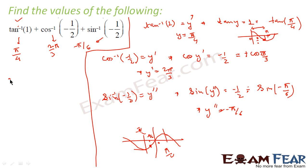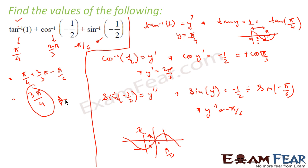Now let us add all three parts. This becomes π/4 plus 2π/3 minus π/6. Adding everything together, you get 3π/4. And that is my answer.